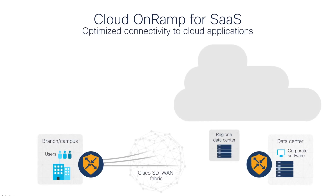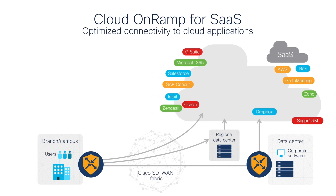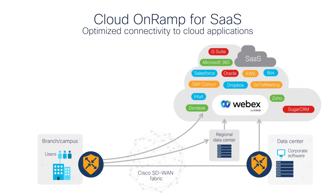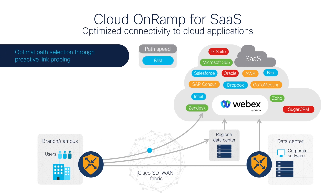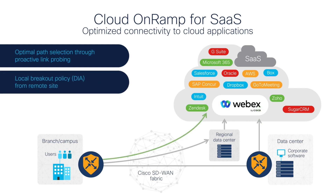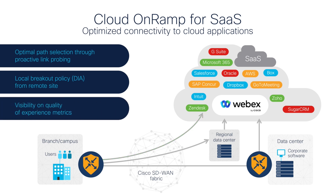Cisco SD-WAN is here to help with cloud on-ramp for SaaS. It enables enterprises to build a scalable WAN infrastructure that reduces WAN transport costs and the operational expenses of the network. It does this by continuously monitoring all possible paths to the SaaS application and intelligently routing cloud application traffic to the best performing path, providing a fast, secure, and reliable end-user experience without human intervention.